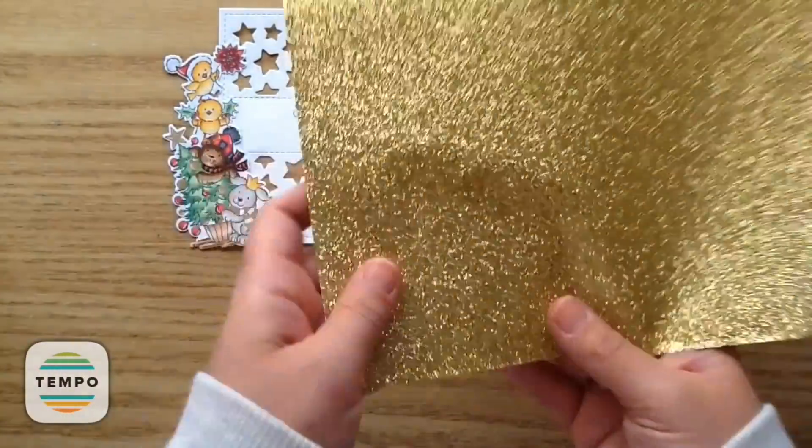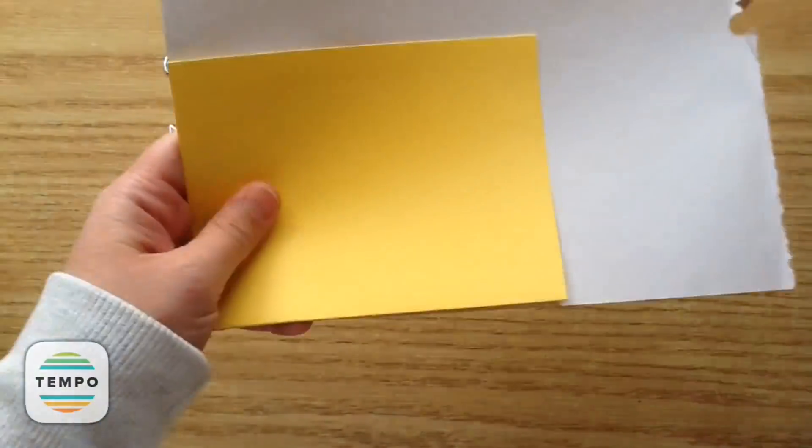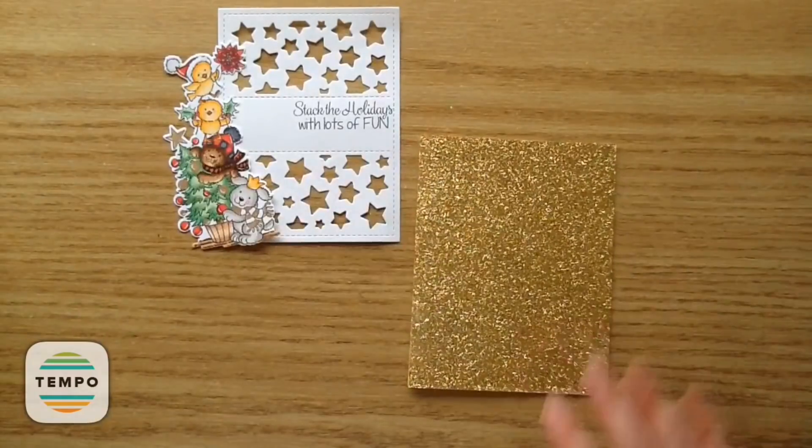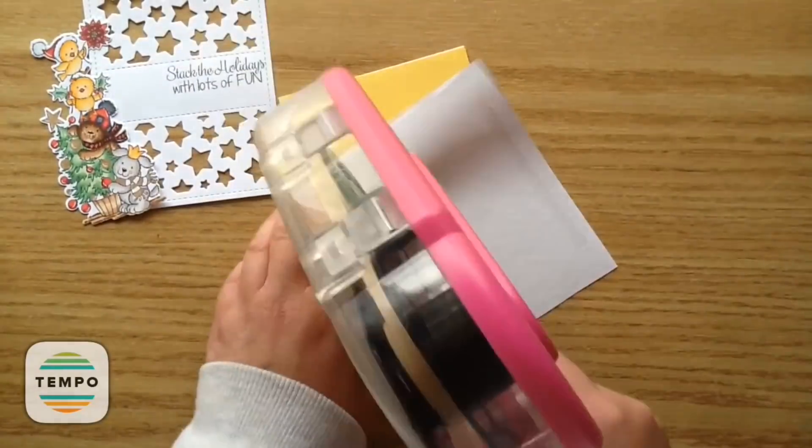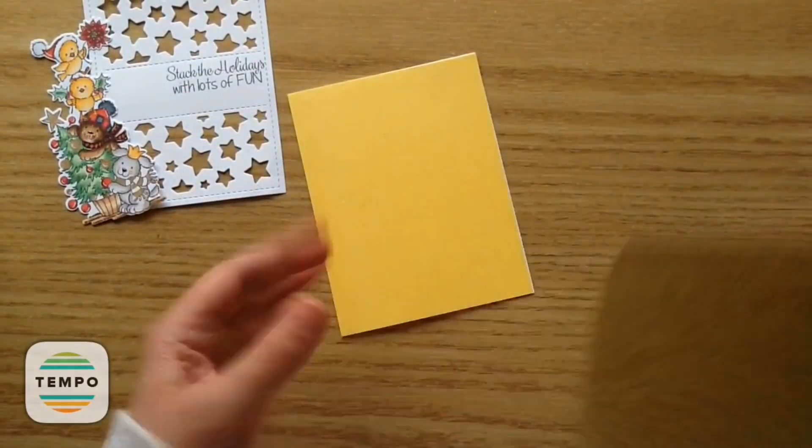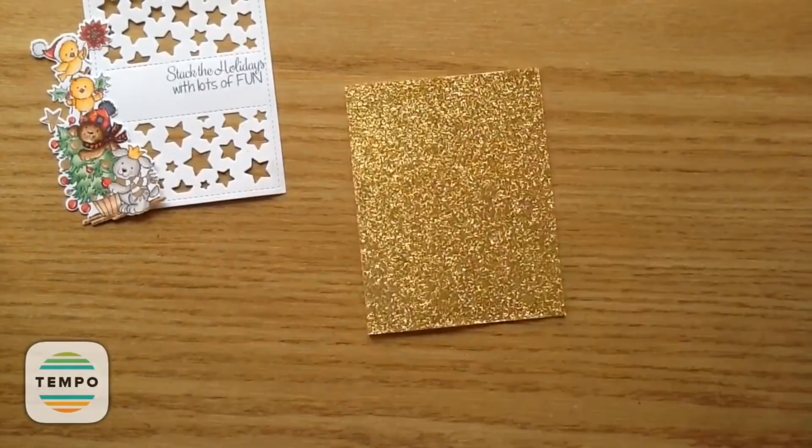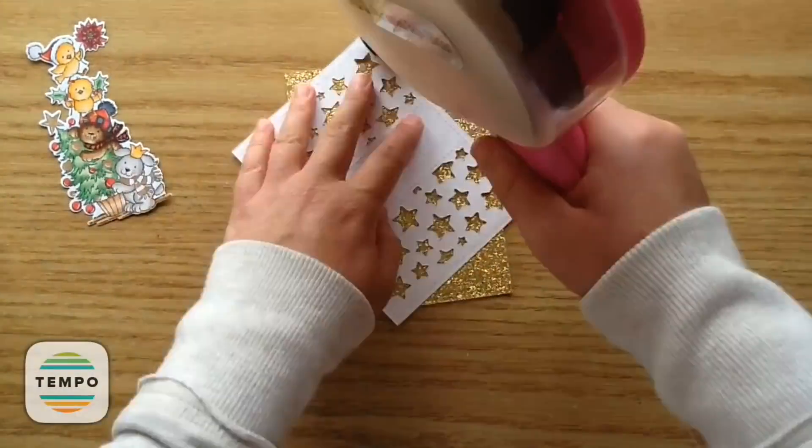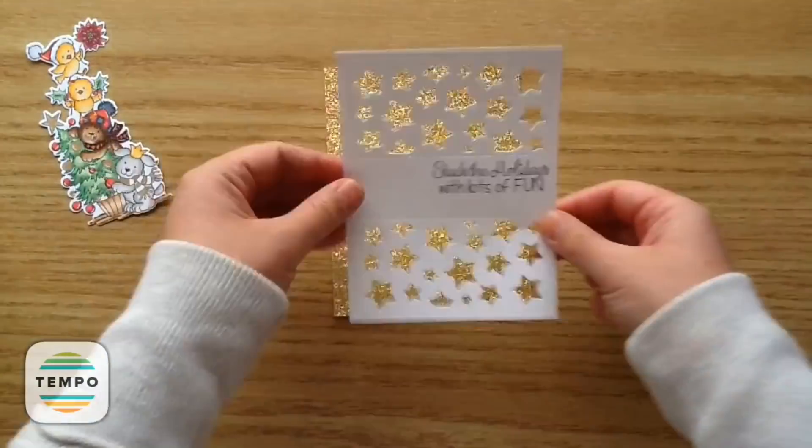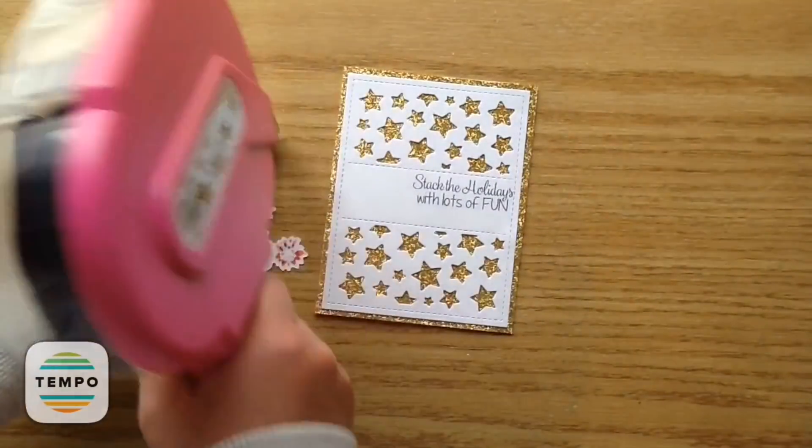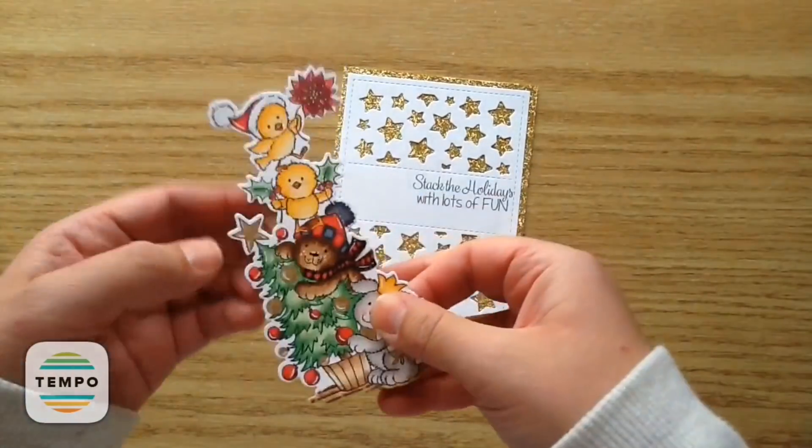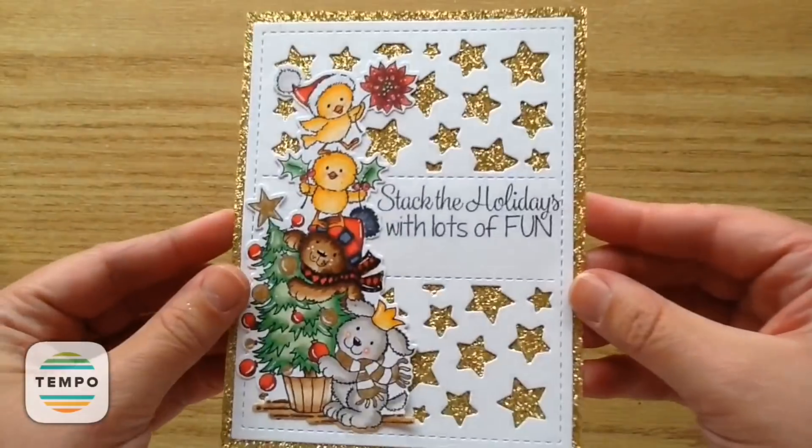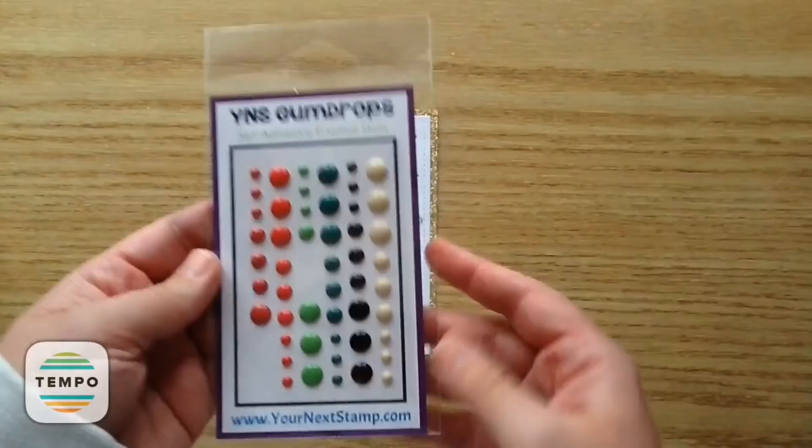Now I'm going to take all of my pieces. I have an A2 sized card base and I have that glitter paper. So I'm just using my scissors and trimming it out so that that can be the top layer on my card base. And I'm just using my ATG gun to adhere that down. And then I'm going to adhere down that little star panel. And that looks so cute. And then I can adhere on this cute image. And then I'm going to take the Your Next Stamp gumdrops and I'm going to put three red ones right underneath the sentiment. So that was my simple card for this project today.